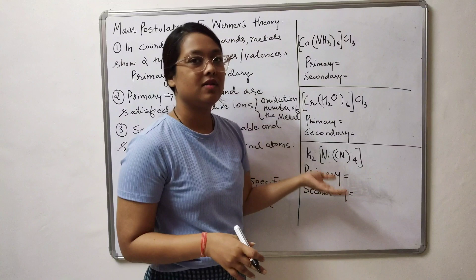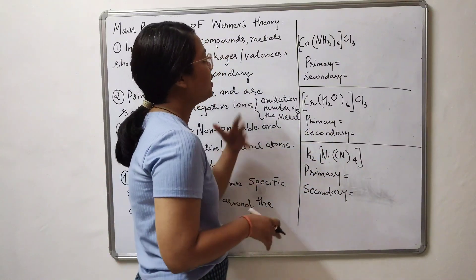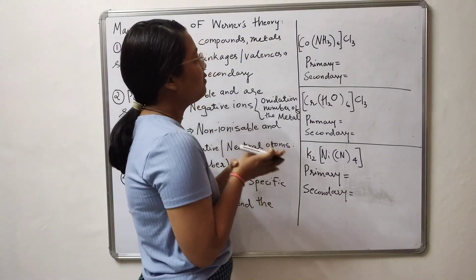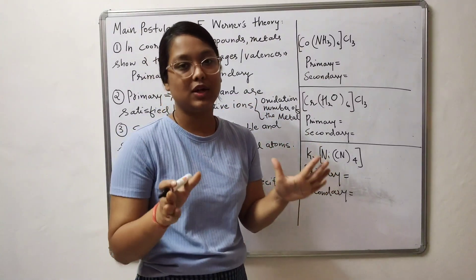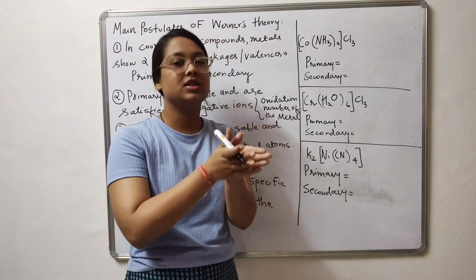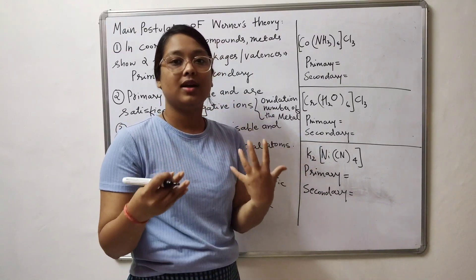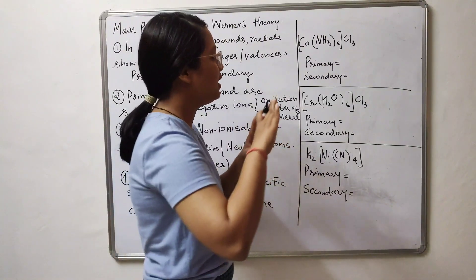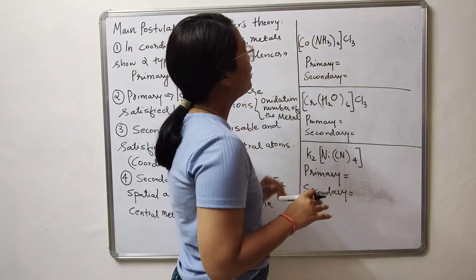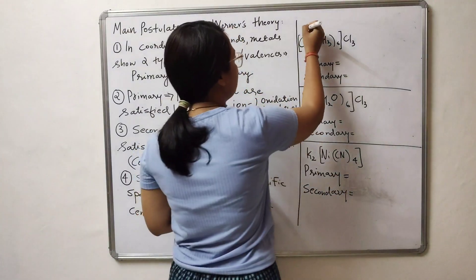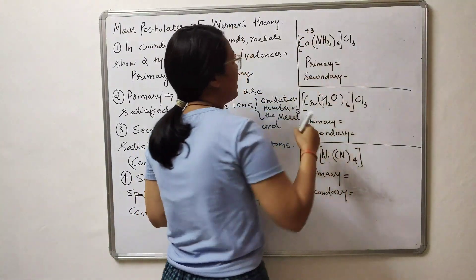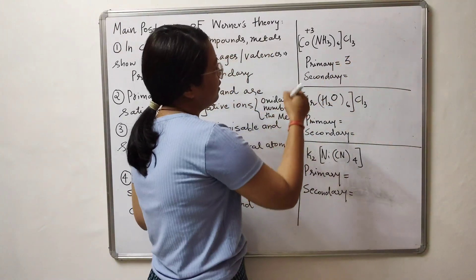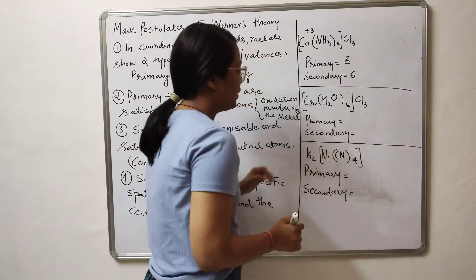Let us solve three more examples using the same concept. The first complex is a hexamine cobalt complex. For primary valency, look for the oxidation state of the metal — be careful, the oxidation state will be a positive value but when you write the primary valency, you do not include the sign. Cobalt is in a +3 oxidation state, so the primary valency is 3, and the secondary valency — the coordination number — is 6.